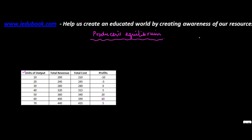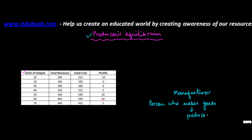Before we get into this, let me ask you a question. What do you mean by a producer? A producer is also sometimes called the manufacturer, and is a person who makes goods. All these factories which are there — the person who owns the factory and produces goods is known as the manufacturer or the producer.